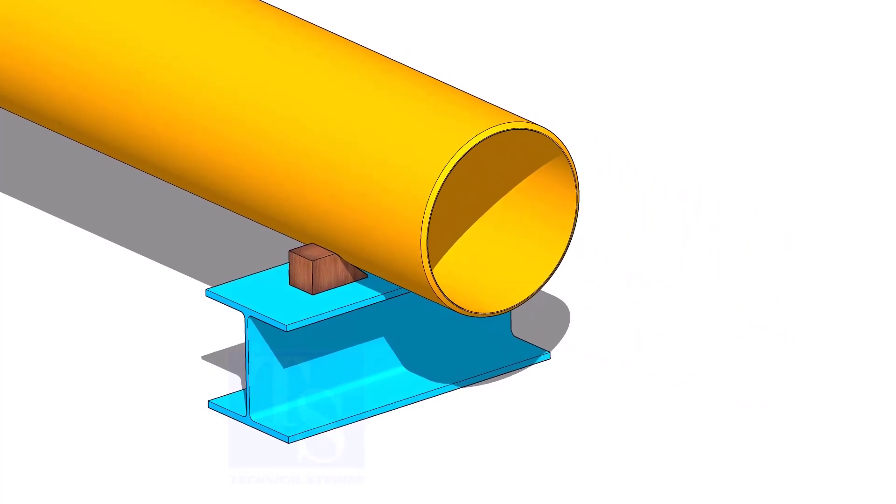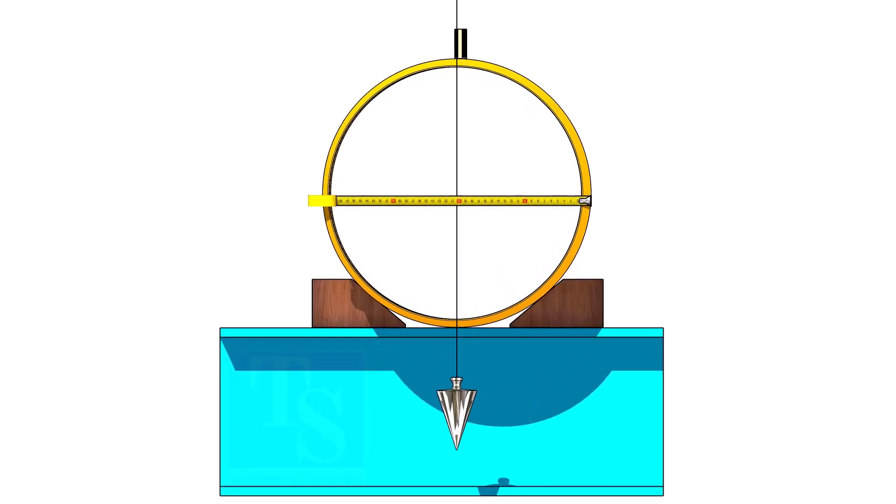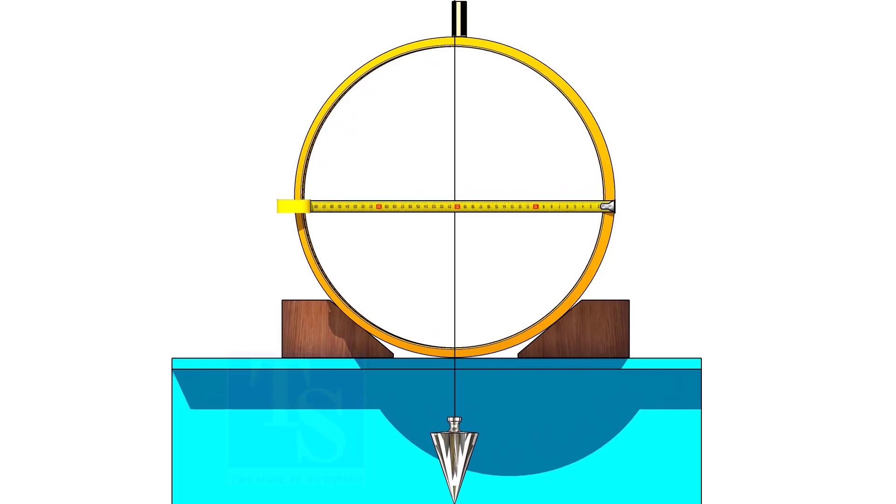Put a plumb at the center of the pipe. Adjust the plumb to the half diameter of the pipe.